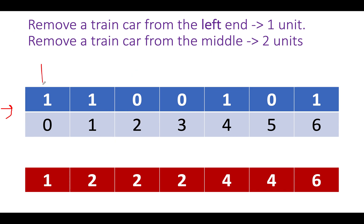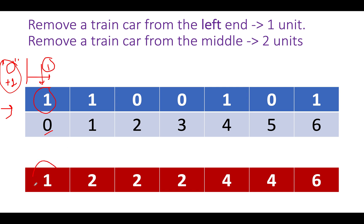The first element is 1, which is illegal. One way is to remove all elements from the left end — that costs i+1 = 1 unit. The other possibility, assuming a middle removal, is 0 + 2 = 2 units. Out of 1 and 2, the lower is 1, so we write 1 here.